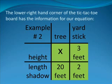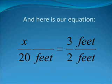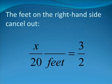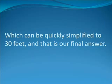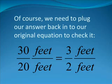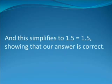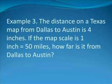The lower right-hand corner of the tic-tac-toe board has the information for our equation. And here is our equation: X divided by 20 feet equals 3 feet divided by 2 feet. The feet on the right-hand side cancel out. We multiply both sides by the denominator on the left-hand side, and then we get X equals 3 times 20 feet divided by 2, which can be quickly simplified to 30 feet. Of course, we need to plug our answer back into the original equation to check it. 30 feet divided by 20 feet equals 3 feet divided by 2 feet, and this simplifies to 1.5 equals 1.5, showing that our answer is correct.